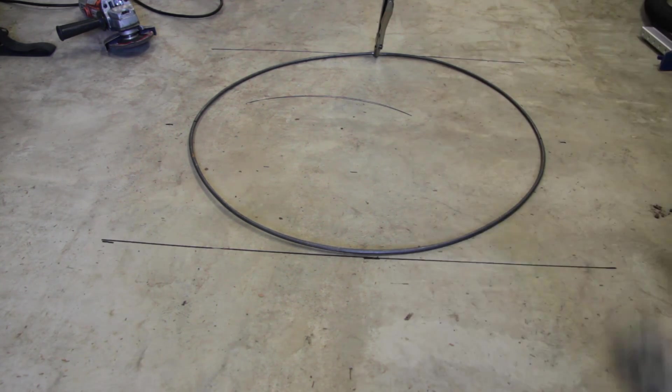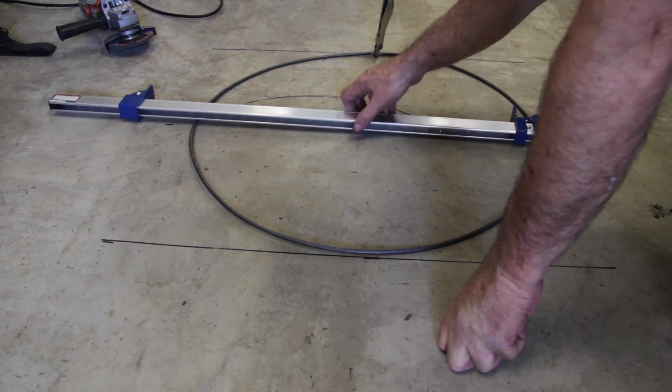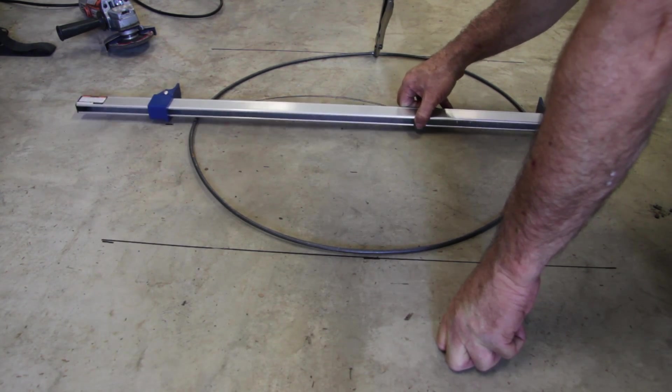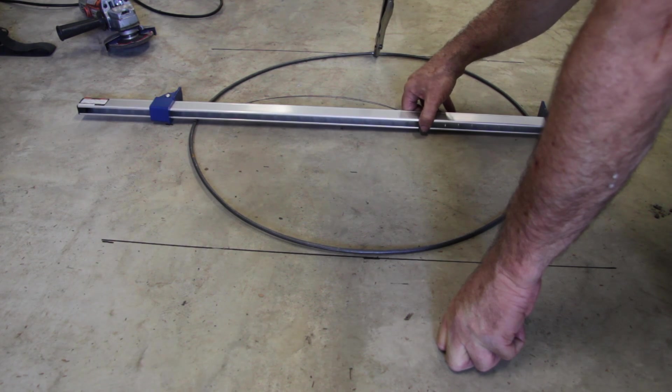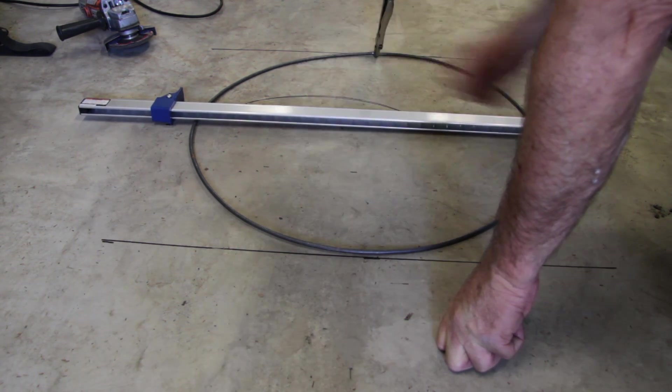And where you see the vice grips at the very top, that is just held together. So when I mark those, I'll have an exact half circle and then two quarters, which I'll then use and tack weld them to the base of the top ring of the fire pit.